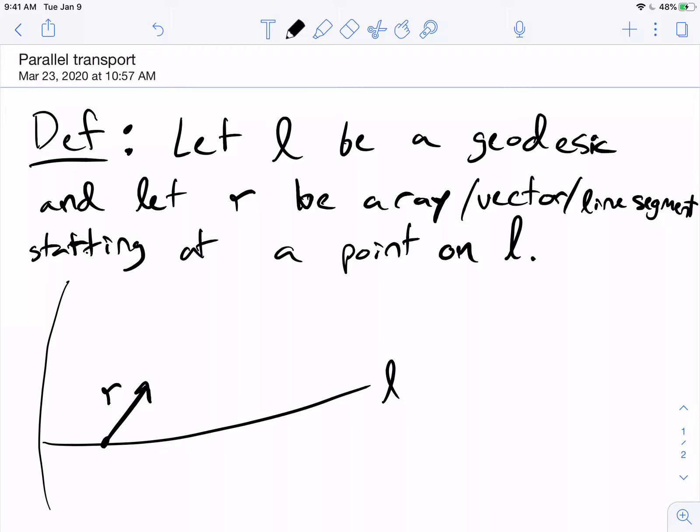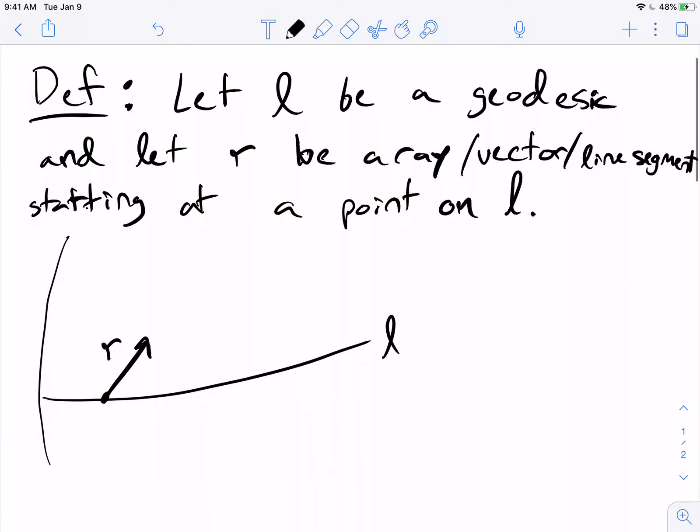I don't really care how long the ray is, because all I care about is the angle that it makes with respect to the geodesic L. So let's call that angle alpha. So I haven't defined anything yet.